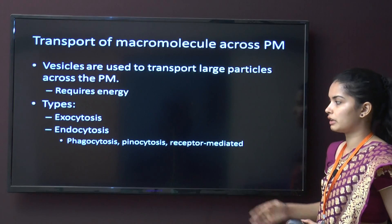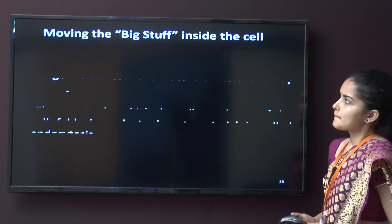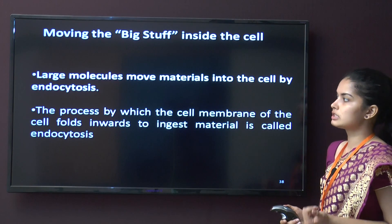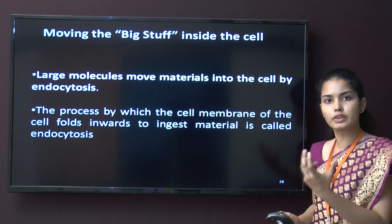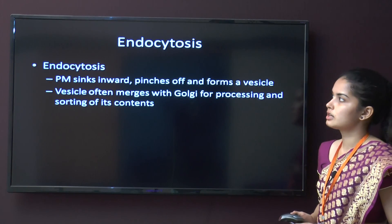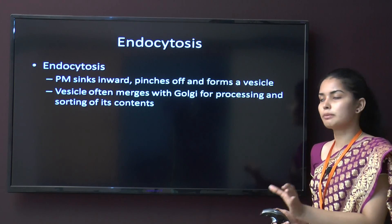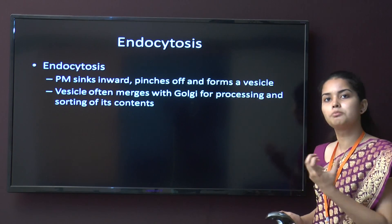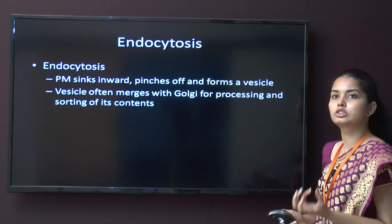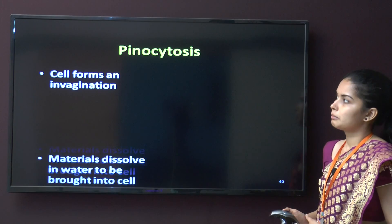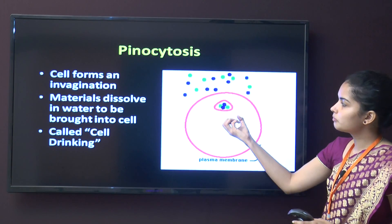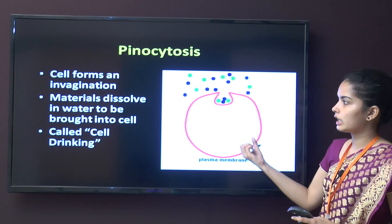Endocytosis requires energy and is movement of materials into the cell. Exocytosis is movement of materials out of the cell. Types of endocytosis include phagocytosis, pinocytosis, and receptor-mediated endocytosis. In endocytosis, the cell membrane folds inward to ingest the material. The plasma membrane sinks, pinches off, and forms a vesicle, which then merges with the Golgi for processing and sorting.